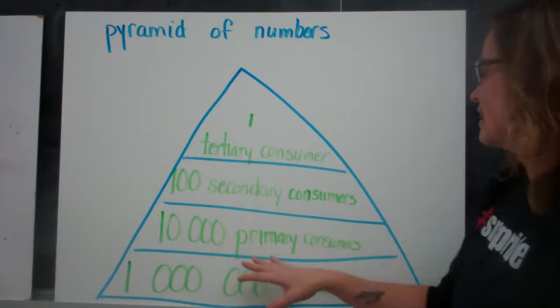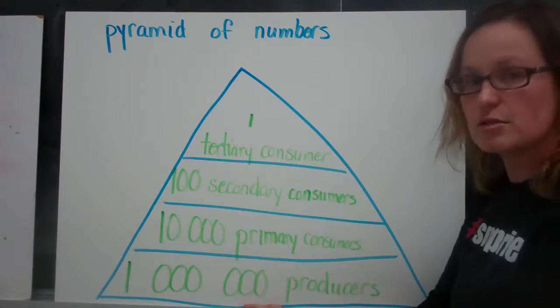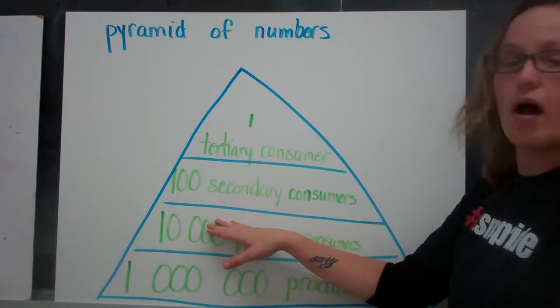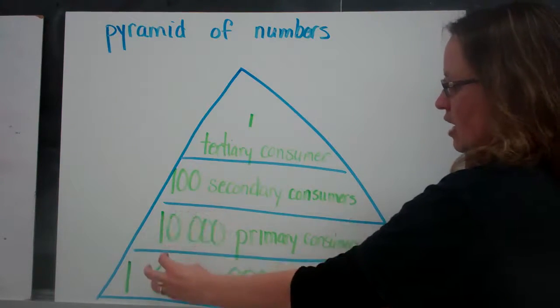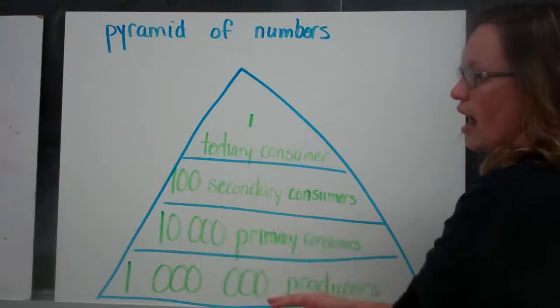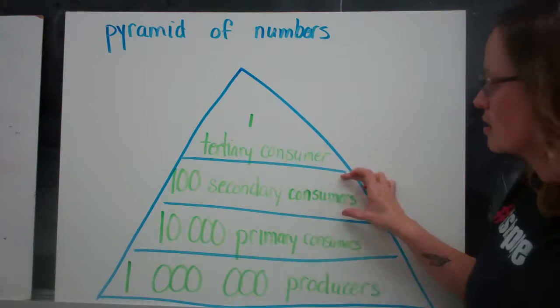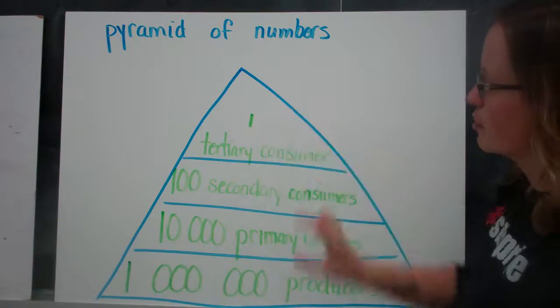And then in the next level, there's 10,000 primary consumers. So these are our consumers that are going to eat these producers. So there's an energy loss here, right? Because these things, they're not going to just eat one of each. They need several of each in order to have the energy to meet their basic needs.